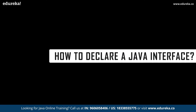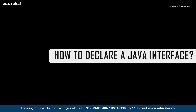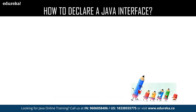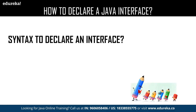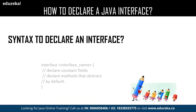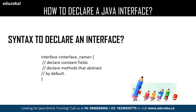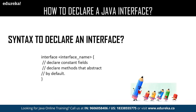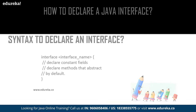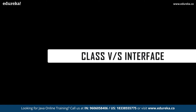Now let us have a quick revision on how to declare an interface. This is the syntax for declaring an interface — you use the interface keyword followed by the name of your interface. Inside the interface you can declare your methods. By default, all methods declared in an interface are considered to be public. Now let's find out the differences between class and an interface.